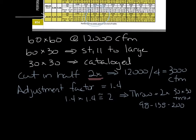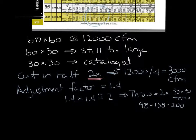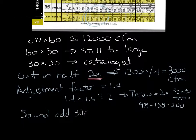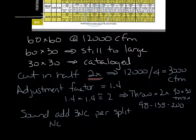For the sound of the oversized grill, it's a good rule of thumb to add 3 NC for each time you split the grill. NC-24 is the cataloged 30 by 30 sound data, so add 3 twice and you get NC-30.